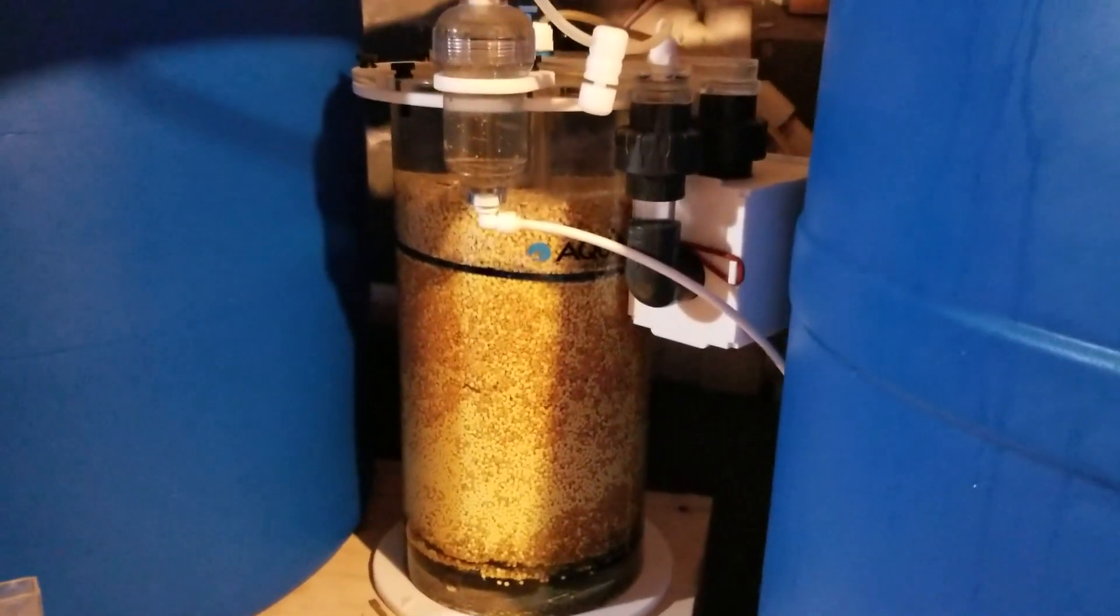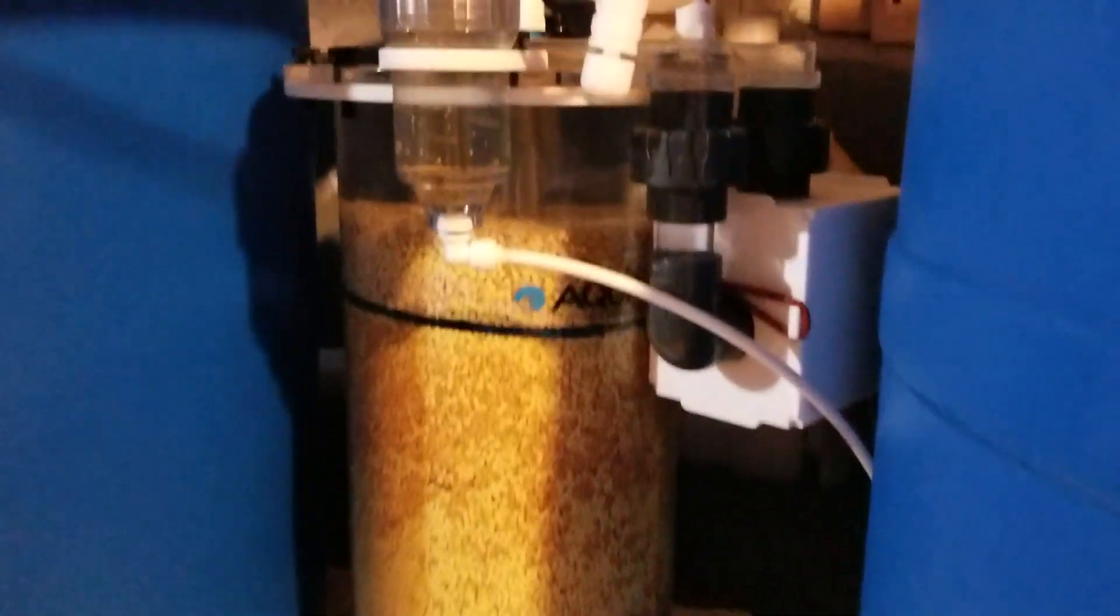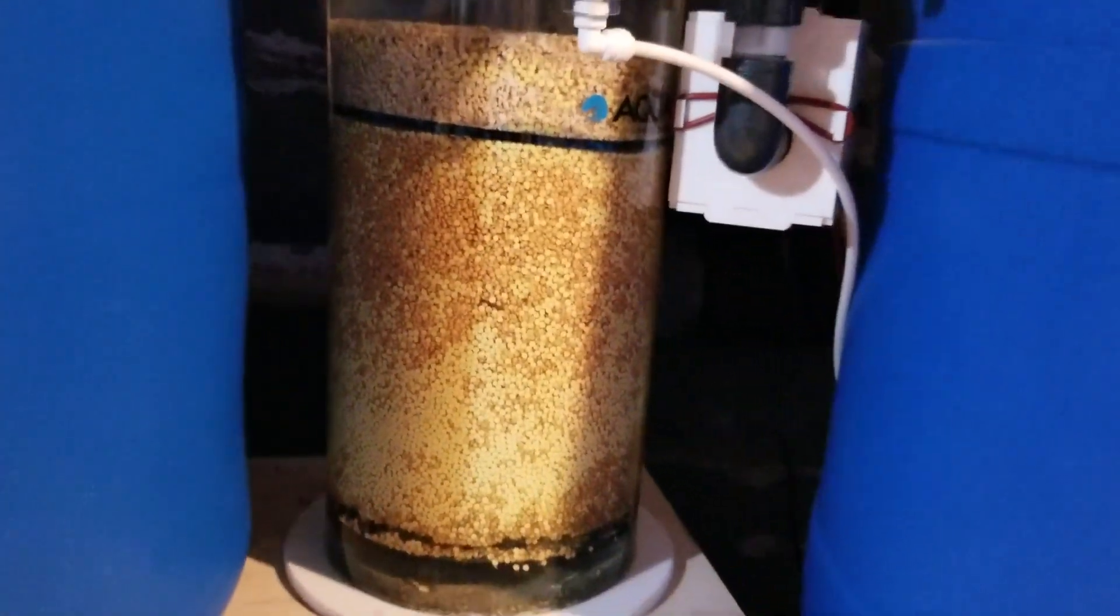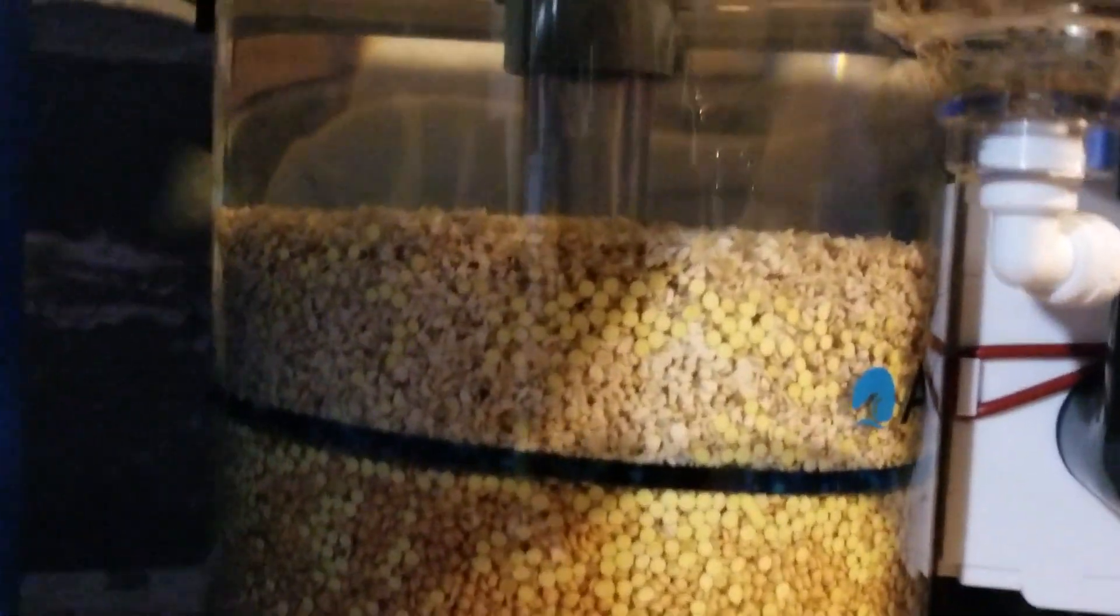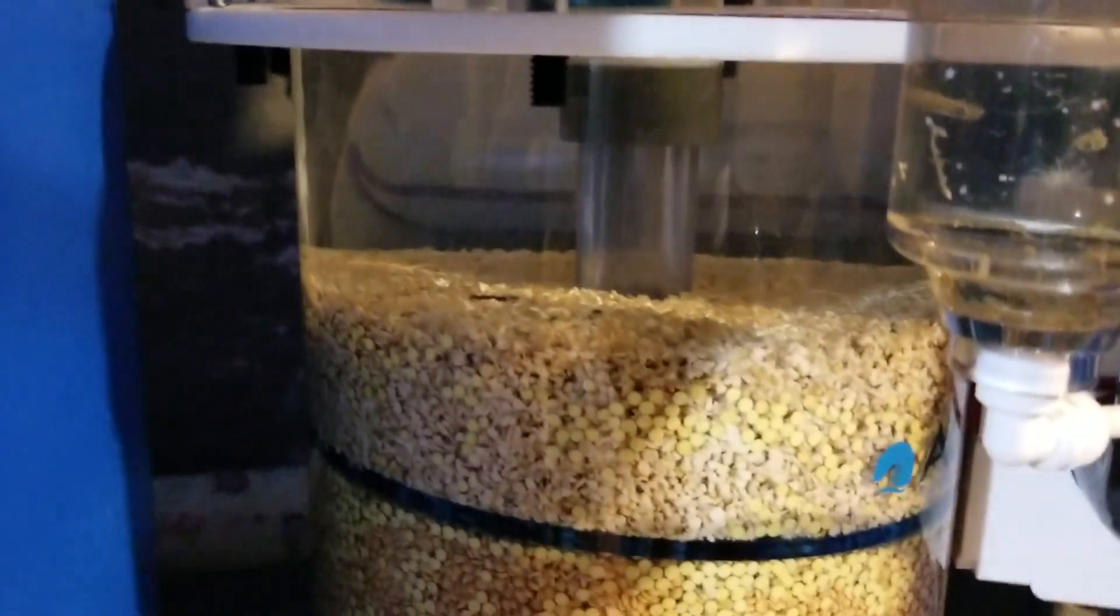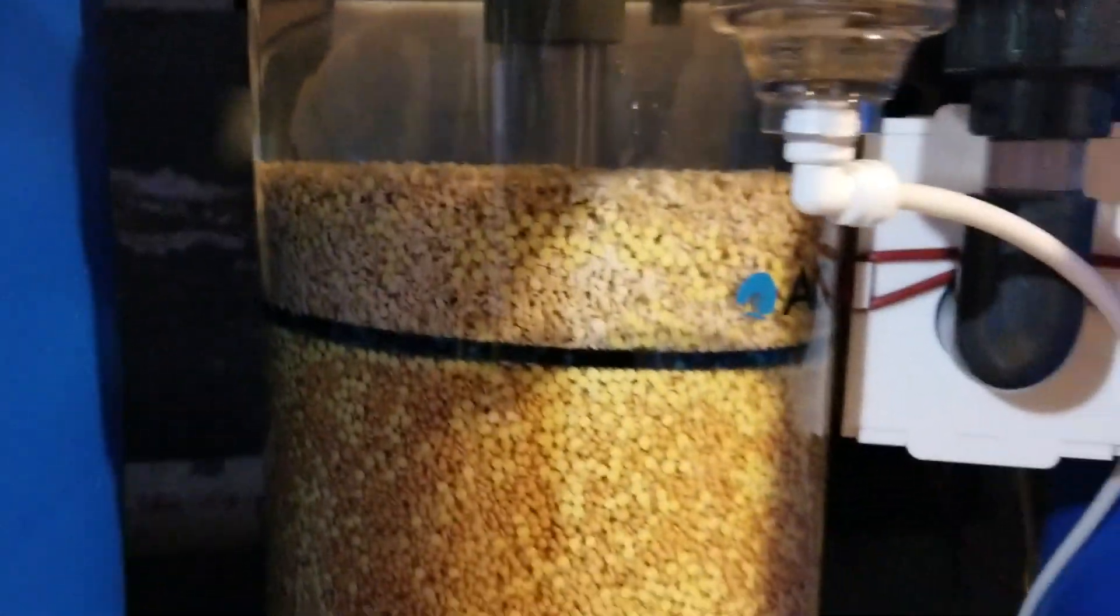This is my sulfur denitrifier. You can buy this at Aquamax. It's filled to the black line here with sulfur bead. Then from the black line up is a crushed aragonite, a little sulfur bead mixed in. But it's about three inches of crushed aragonite.